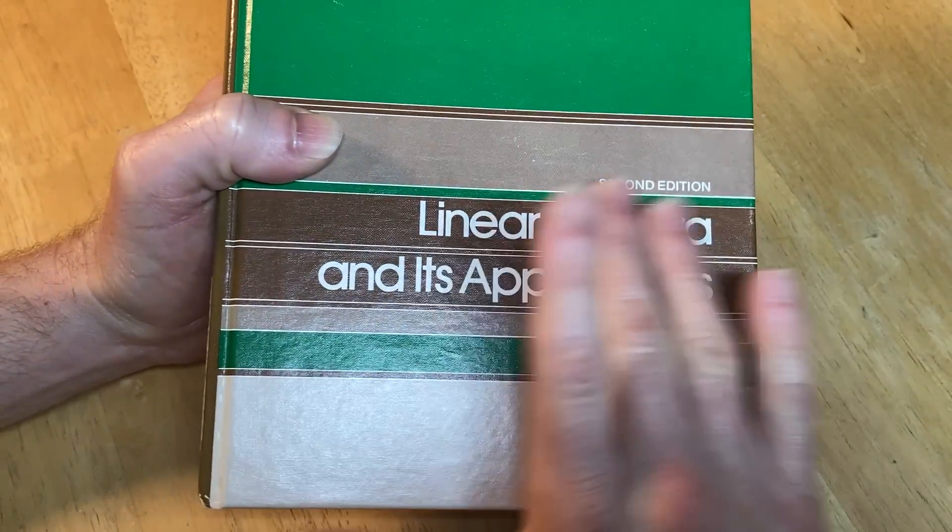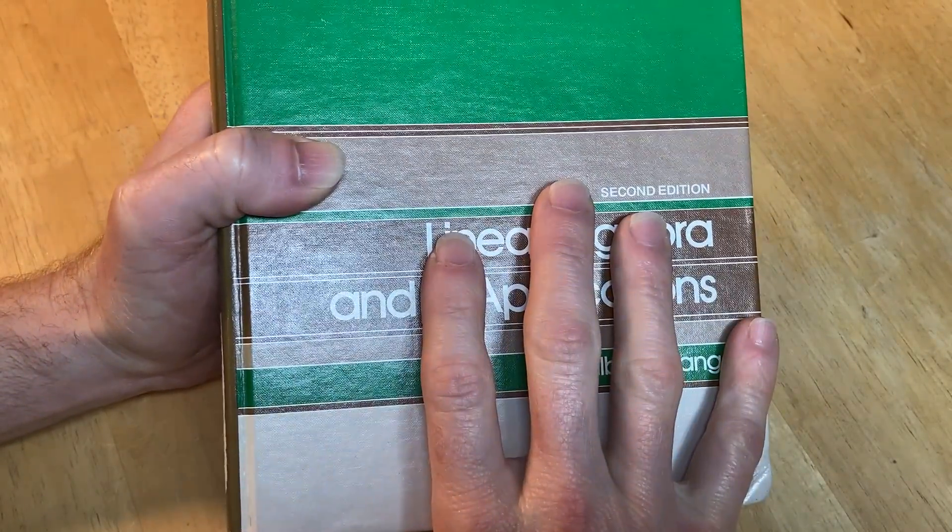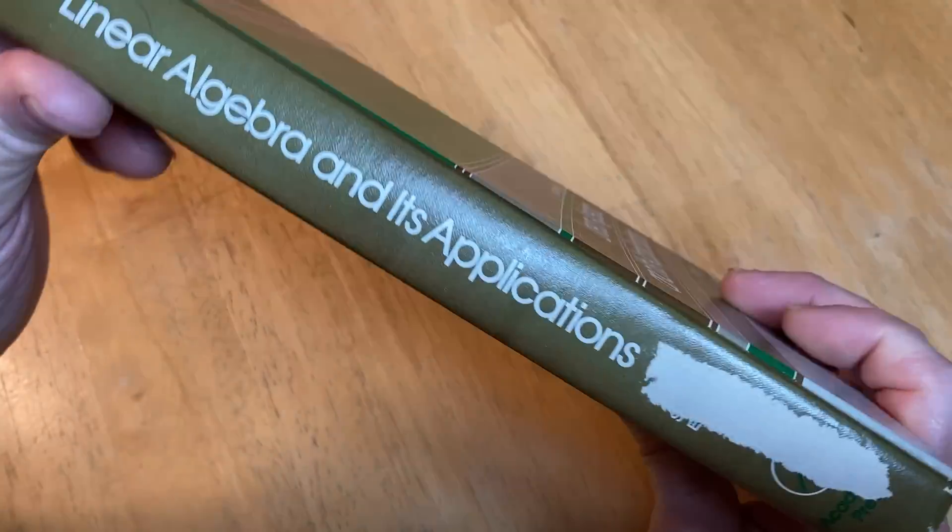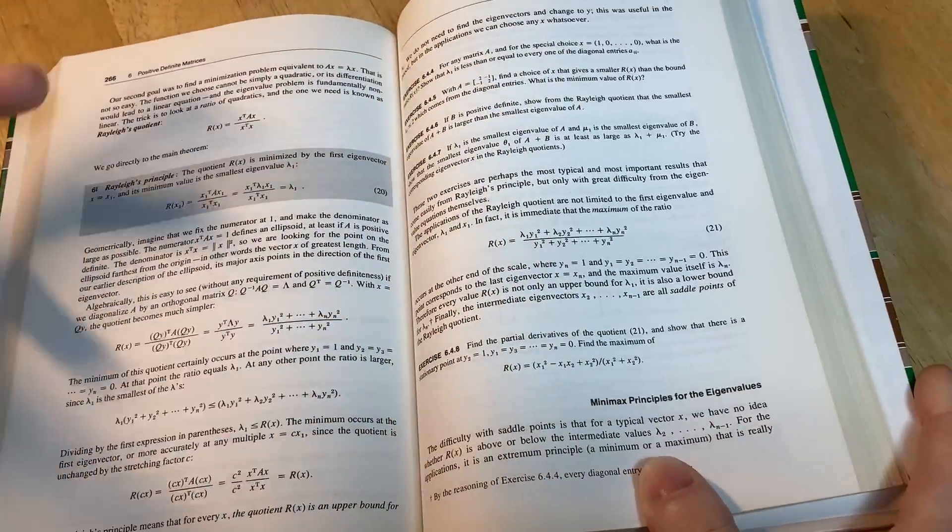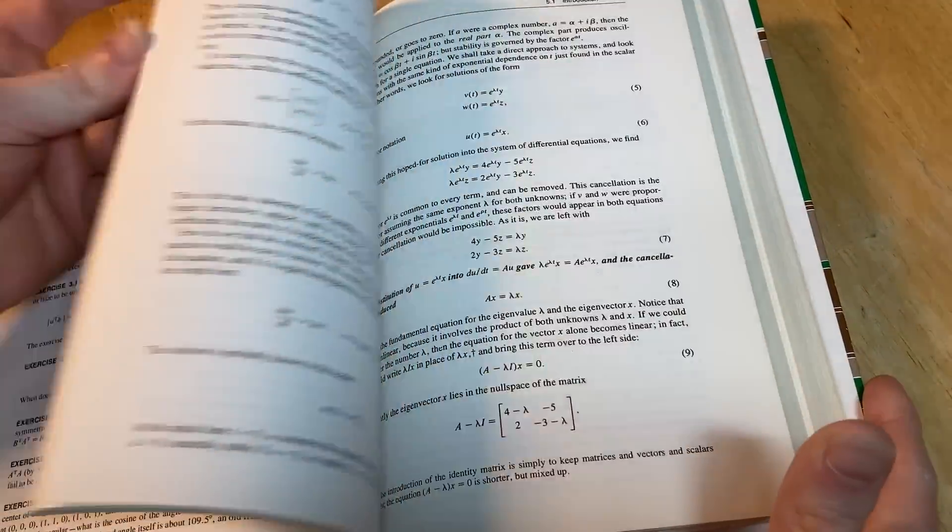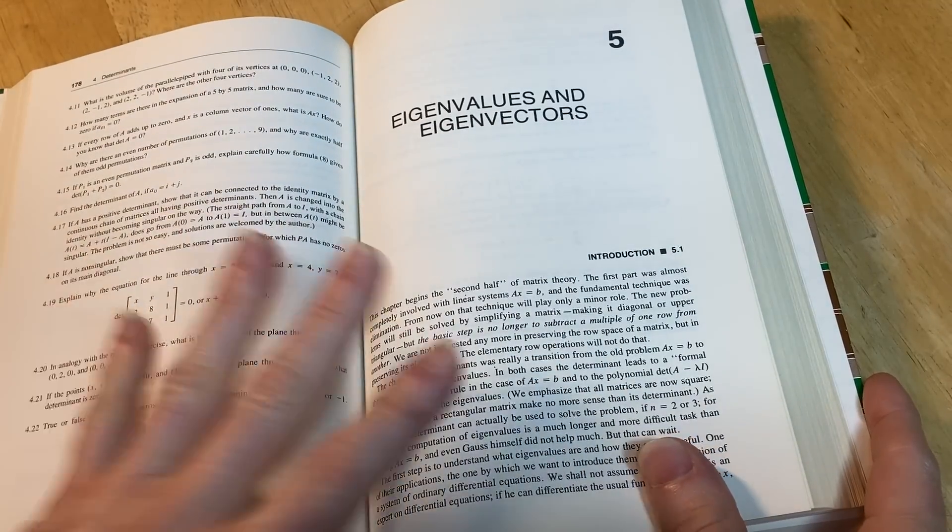It's the one and only Linear Algebra and Its Applications, written by Gilbert Strang. This is the second edition from 1980, the first edition was published in 1976. So it's an old book. I gotta give it a whiff here and I'm just really excited to show you this book today.